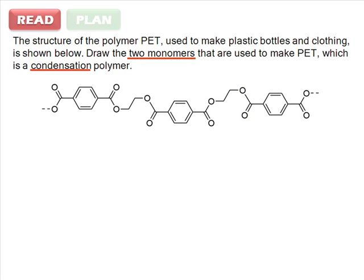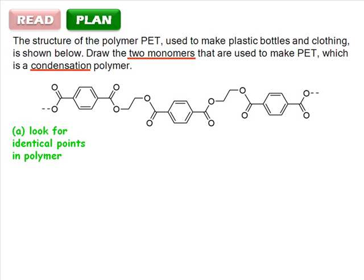To plan your approach, first look for identical points in the polymer. This will help you locate the repeating unit. Then, since this is a condensation polymer, locate the site within the repeat unit where a small molecule could have been eliminated.